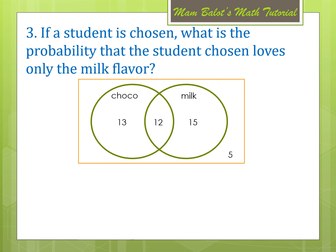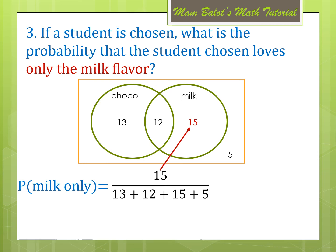Next: what is the probability that a student chosen loves only the milk flavor? Since we are referring to the word ONLY, we will not include the students who love milk and also love choco. So, we are only referring to 15. Therefore, the probability of milk only is 15 over all the numbers in the diagram — 15 over 45, which is equal to one third.